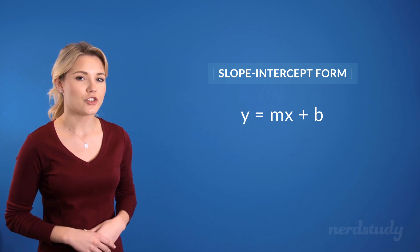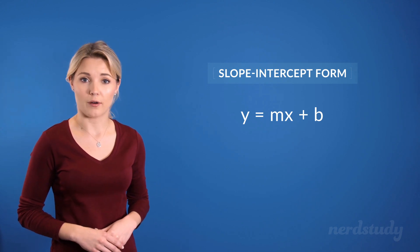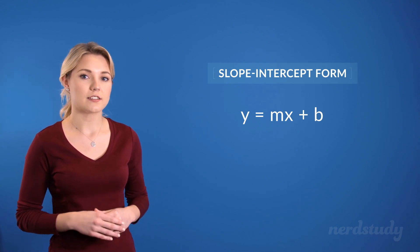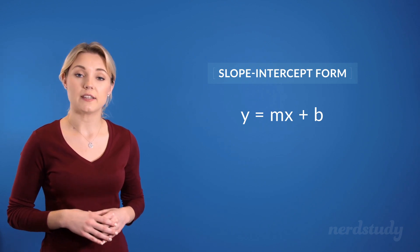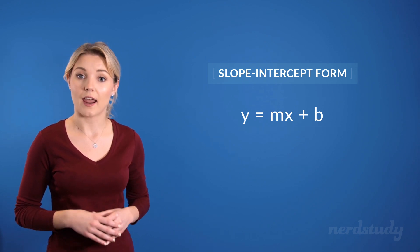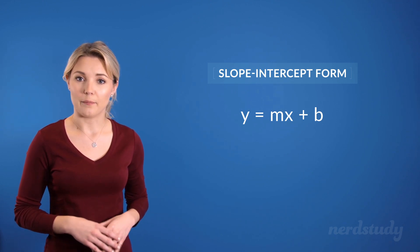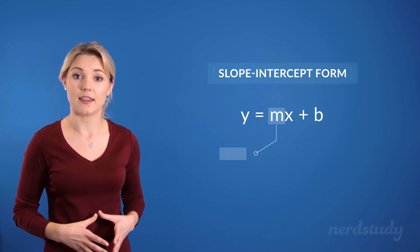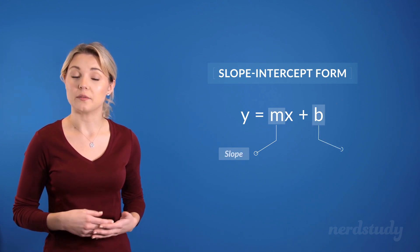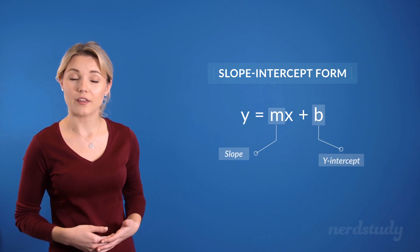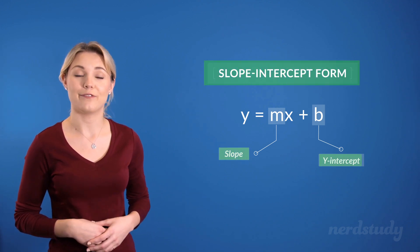Now, what's interesting about the slope-intercept form is that when the equation is simplified down to this state, it makes it easy for us to identify the slope of the equation and the y-intercept. In this form, the slope is always equal to this m right over here, and the y-intercept is equal to b, hence why we call this form the slope-intercept form.